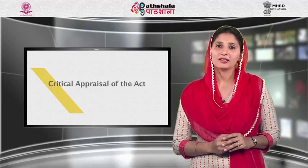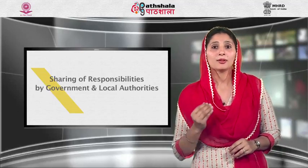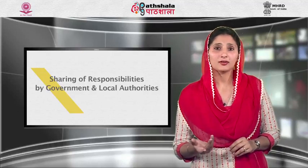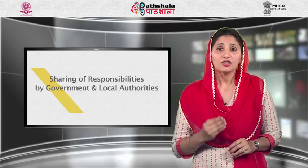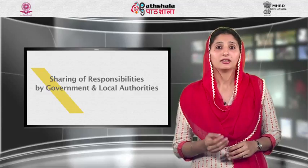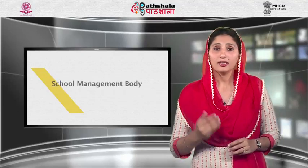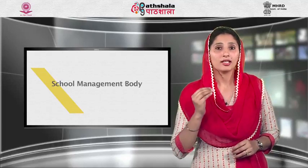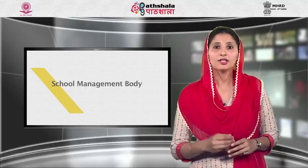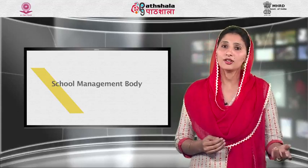Now we will discuss the critical appraisal of the Punjab Act. First, regarding sharing of responsibilities by government and local authority: Section 7 provides for sharing of financial and other responsibilities, but does not specify any clear strategy for such allocation. Section 8 rests responsibility for establishment of new schools on the local authority, but it is not clear what percentage of share the provincial government will contribute or what the mechanism of sharing will be. Second, the school management body — Section 11 provides for the establishment of a school management body (SMB), but does not clearly specify who will form it, whether it is the provincial government or local authority, what its composition will be, its roles and responsibilities, who will chair the body, or how it will be run.